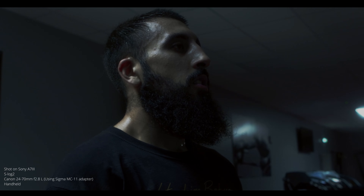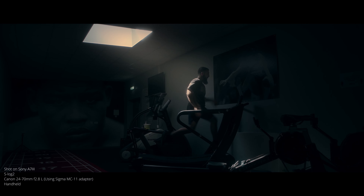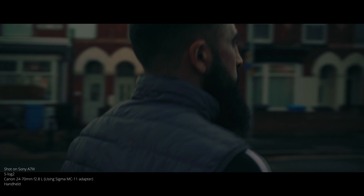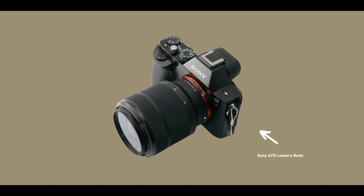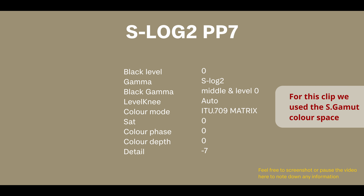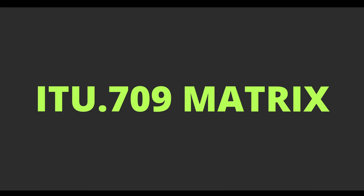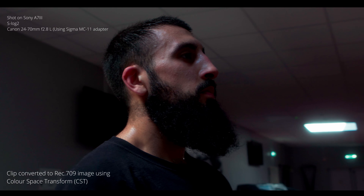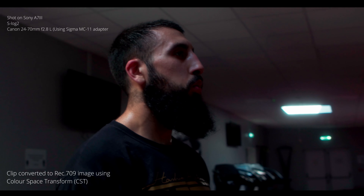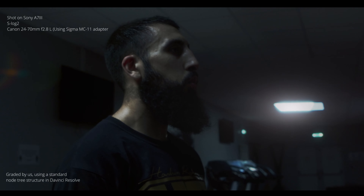Today we'll be going over how we created this dark cinematic look for the boxing commercial we shot a few months ago. This clip was shot on the Sony A7 III with picture profile 7, shooting on S-Log2 with S-Gamut. This was before we learned about using the color space ITU 709 matrix instead of S-Gamut, as S-Gamut with the Sony A7 III produces really strong magenta tones which are hard to get rid of — we'll show that in this clip today.